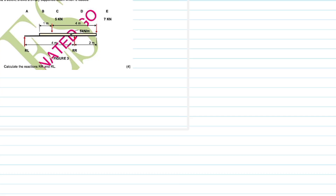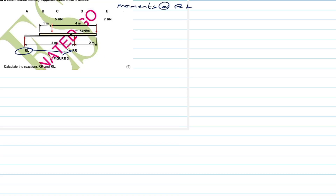I prefer starting with the reaction on the left-hand side. So we say: Moments at RL. We're going to stand on RL and look across to the right-hand side. We can see the right reaction RR — we need to see which direction it is moving. As you can see, RR is going up, which is the anti-clockwise direction. So we start with: Sum of anti-clockwise moments equals sum of clockwise moments.